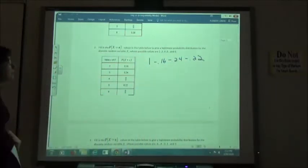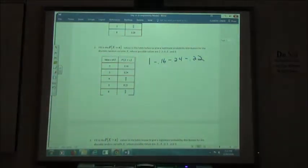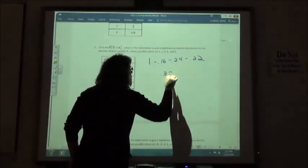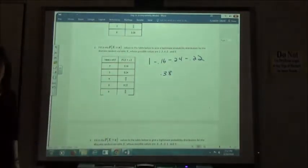How much do we have left for our other two? 0.38. So now we're going to pick any two numbers that add up to 0.38.